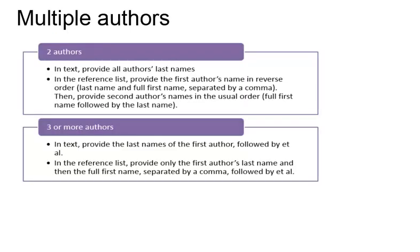For two authors, the name of the first author listed begins with the family name. For the second author, list in order of the first name then the last name. Multiple authors should appear in the order in which they are listed on the text's title page. In the case of three or more authors, most of the same rules apply. However, in an in-text citation, provide only the last name of the first author followed by et al. and the relevant page numbers.